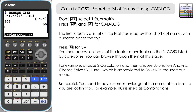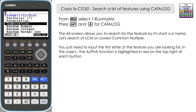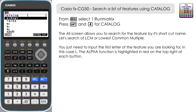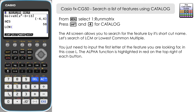Let's go back to catalogue and have a look at the search feature. If we press Shift and 4, press F6 for catalogue again and then press 1 for All, we can search all the features listed from this screen. Let's say we wanted to find the lowest common multiple. If I input L — you can see L listed in red for the alpha function — the first one that comes up is LCM. If we press Execute we've got LCM. Let's find the lowest common multiple of 12, 8 and 9. Execute — that's 72. You can see how easy that was to find.